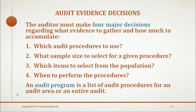Once an audit procedure is selected, the decision of how many items to test in a sample must be made by the auditor for each audit procedure. For example, in an audit procedure to verify the cash disbursements journal, the auditor might select a sample size of 50 disbursements for comparison. Auditors can vary the sample size from one to all the items in the population being tested.